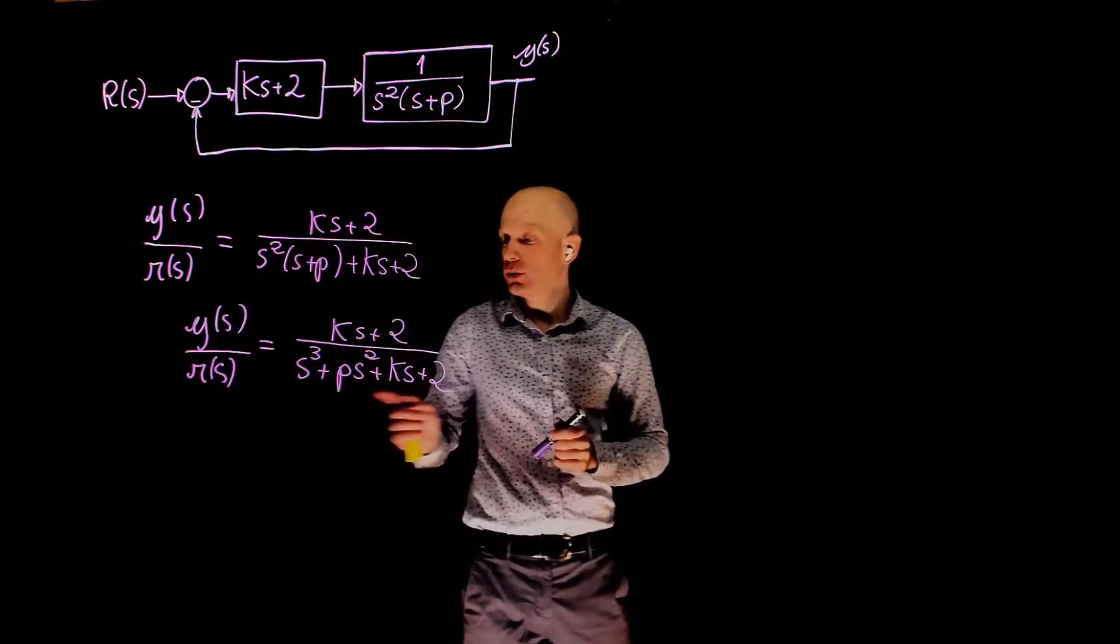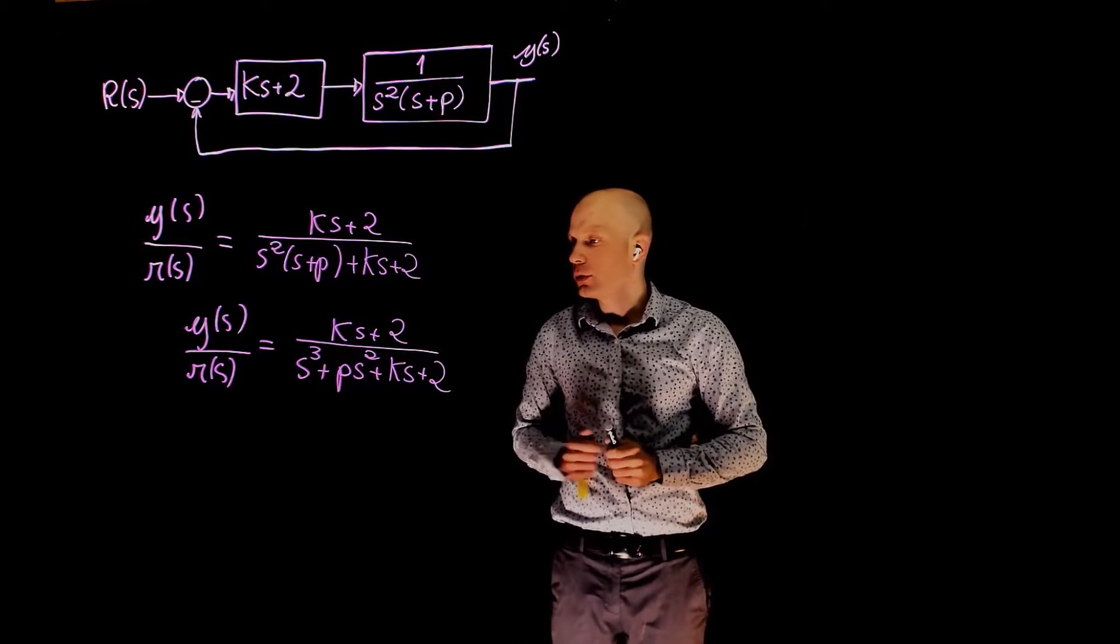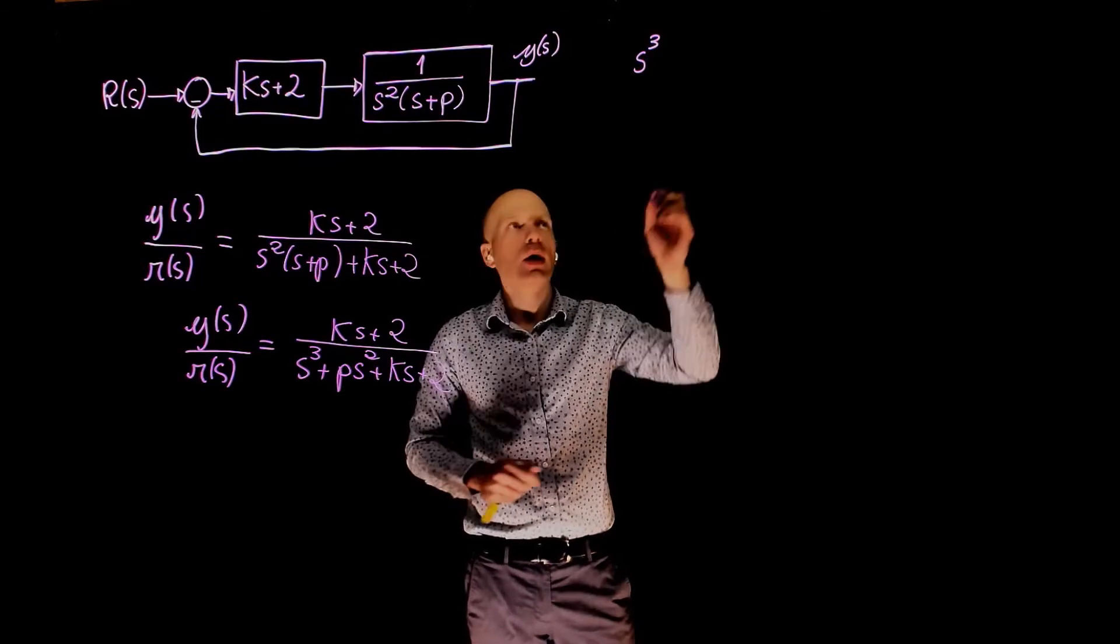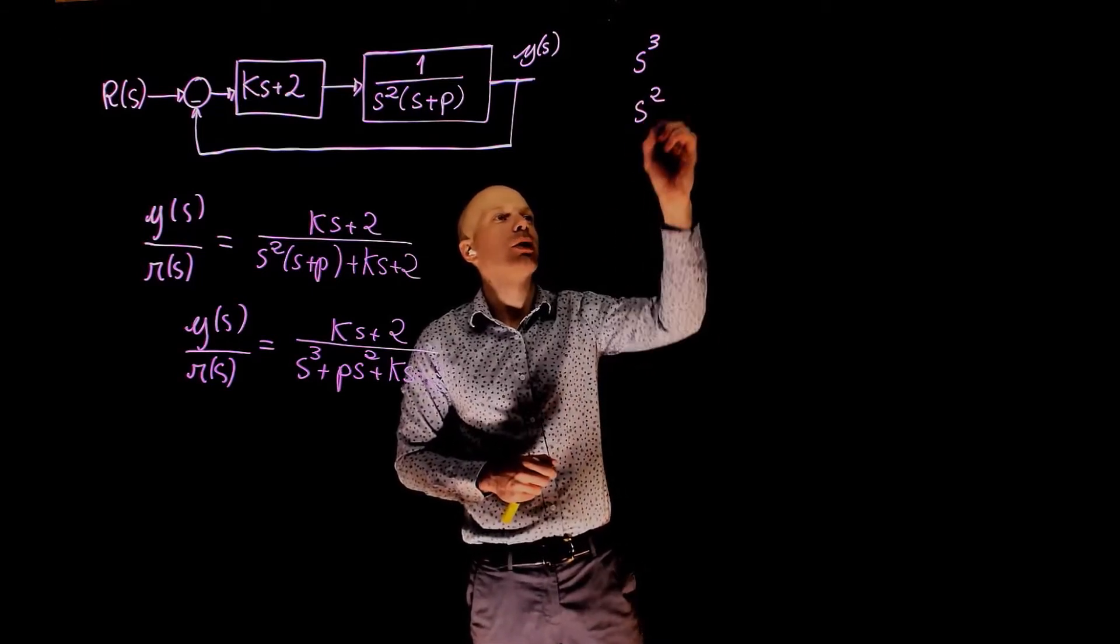Now that we have the transfer function, we can prepare the Routh Array. This is a third-order transfer function. We start with s to the power of 3 and you go down all the way to s to the power of 0.